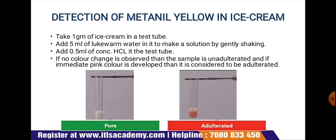Now add 0.5 ml of concentrated HCl into the test tube. If no color change is observed, then the sample is said to be unadulterated. But if an immediate pink color develops, then it is considered to be adulterated.